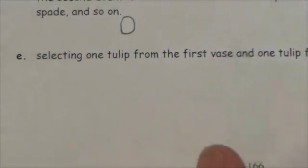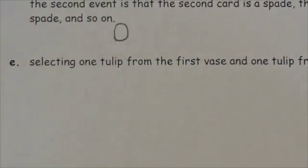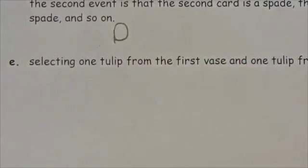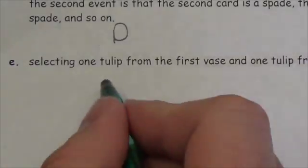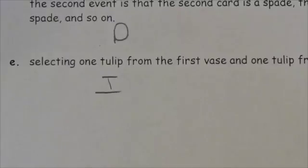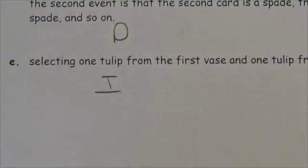Selecting one tulip from the first vase and one tulip from the second vase. I don't know how many tulips are in either vase, but picking a tulip from one vase will not affect the sample space of the second vase, so these would be independent. That first event does not change the probability of getting a tulip from the second vase.